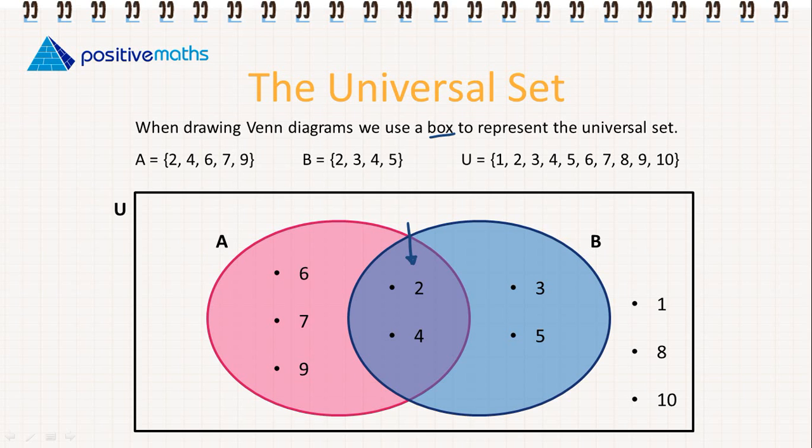So really, when we're doing these problems, we should start by putting in the numbers that are in the intersection. So that's 2 and 4 in this case. Then we should put in the elements that are just in A and just in B. And then we put in the elements that are in the universal set but not in A or B.